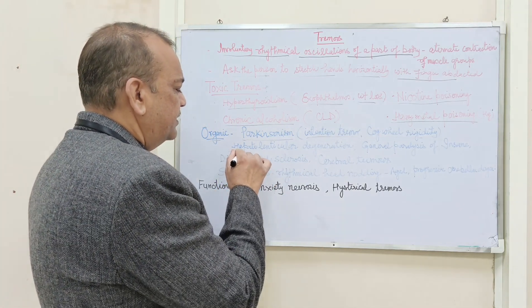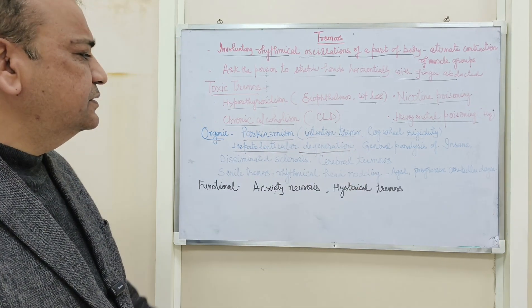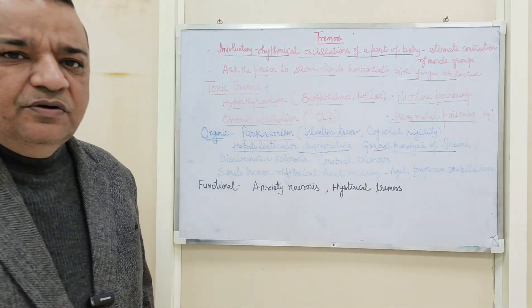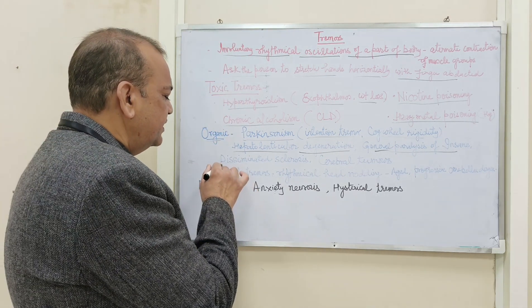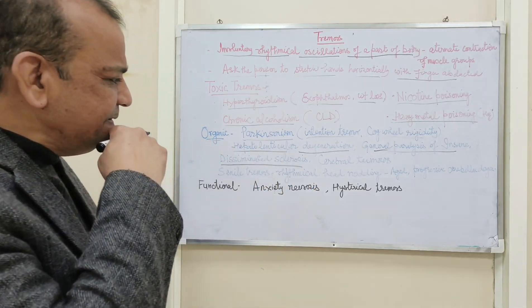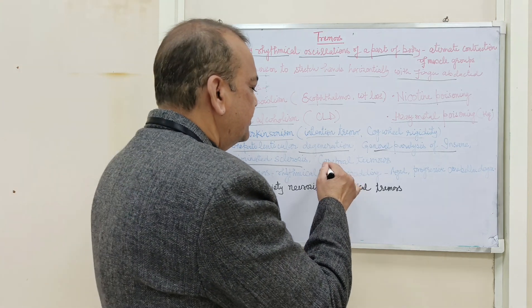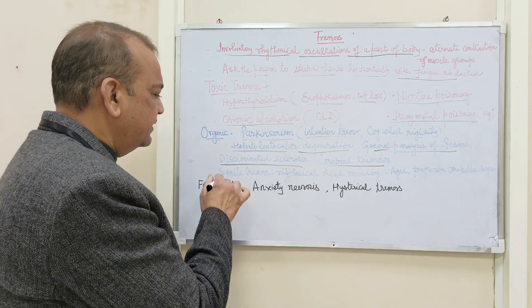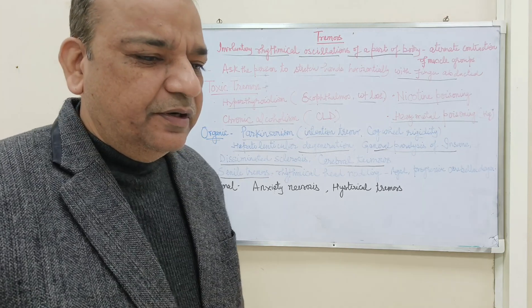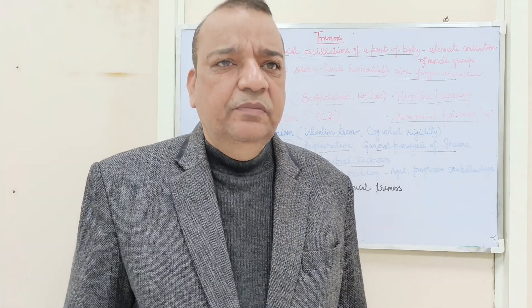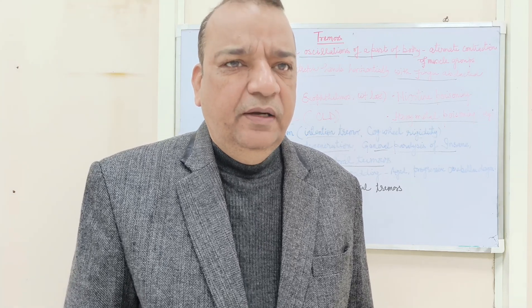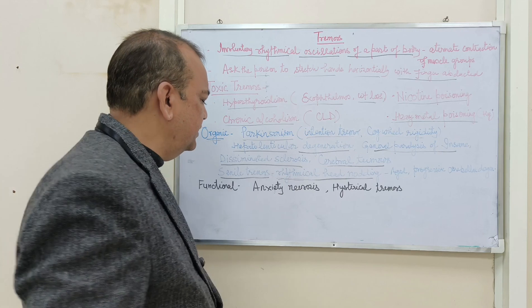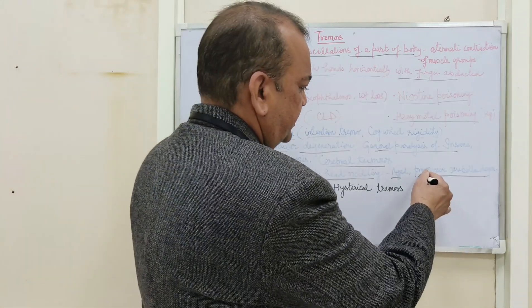Another organic cause is hepatolenticular degeneration, where you will see tremors as well as general paralysis of the insane. Disseminated sclerosis may also result in tremors, as well as cerebral tumours — tumours in the cerebral region or cerebrum. Senile tremors refer to tremors in very old persons; you will sometimes see rhythmical nodding of the head, which is peculiar to senile tremors. Progressive cerebellar damage is also an organic cause of tremors.